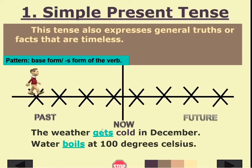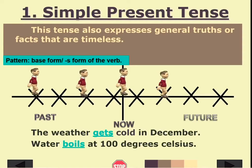In these examples, the verbs 'gets' and 'boils' are in S-form because the subjects are singular. We use the base form when the subject is plural. Since these sentences express facts or true information, they are timeless — they do not specifically indicate past, present, or future.